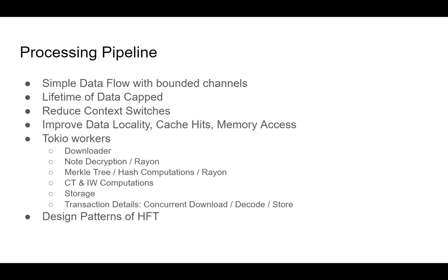To mitigate this problem, we do concurrent download — we send up to eight transaction requests at one time, and when we start receiving results, we do the decoding and storing interleaved with further downloads. This is very efficient. Before this was implemented, the cost of getting transaction details could actually be higher than the rest of the process — now it's rather minimal, all due to reducing latency.